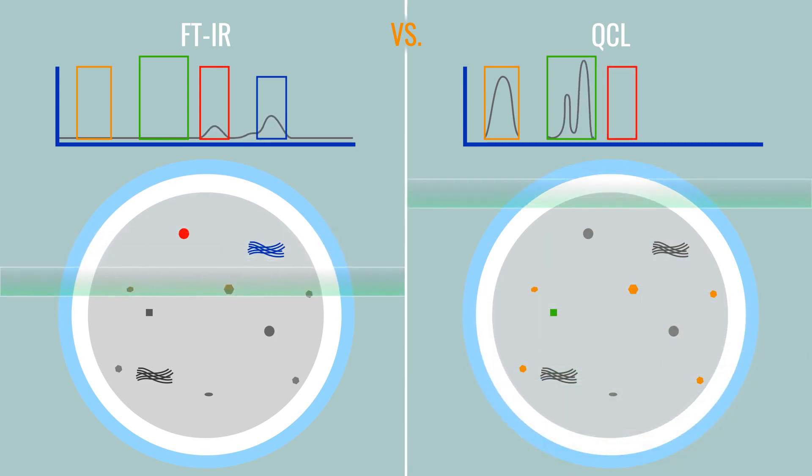Just how quick is QCL? To put this into numbers, scanning a filter area of about 100 square millimeters FTIR would take two and a half hours, while QCL could get the job done in just 25 seconds.